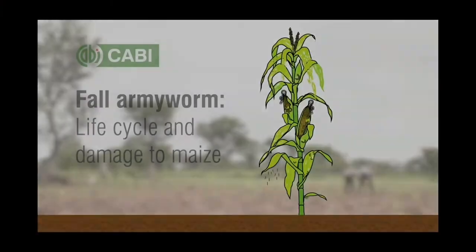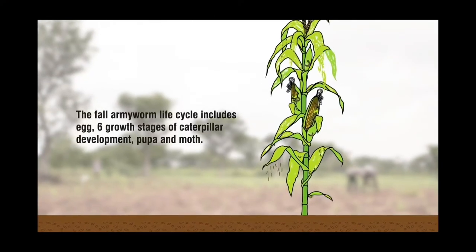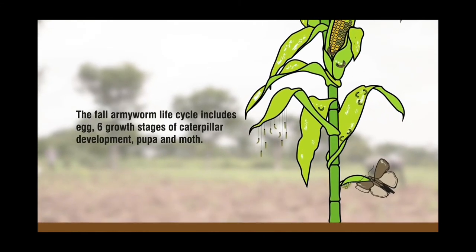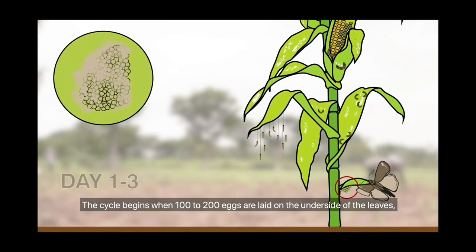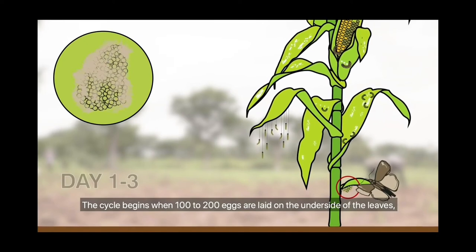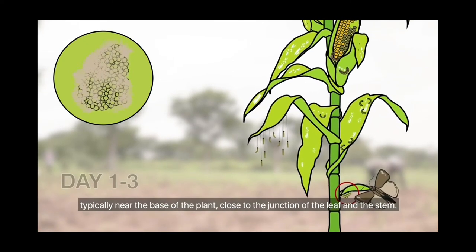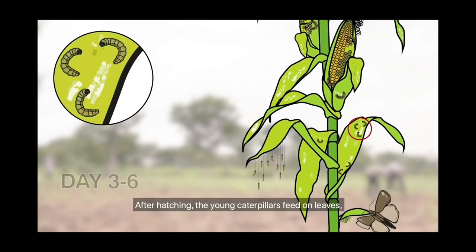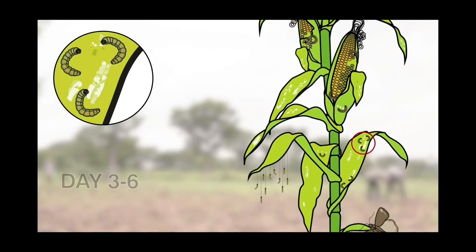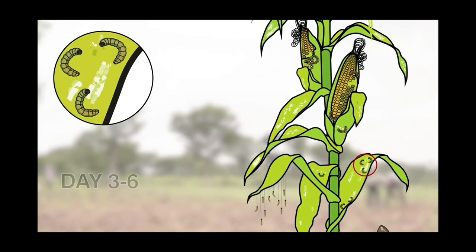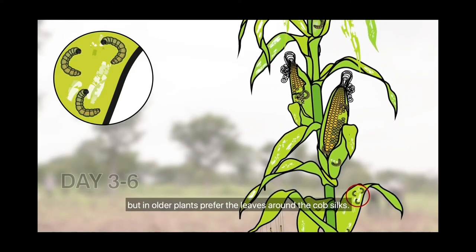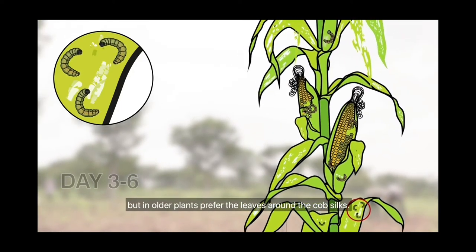The fall armyworm life cycle includes egg, six growth stages of caterpillar development, pupa, and moth. The cycle begins when 100 to 200 eggs are laid on the underside of the leaves, typically near the base of the plant, close to the junction of the leaf and stem. After hatching, the young caterpillars feed on leaves, leaving semi-transparent patches called windows. In young plants, caterpillars prefer to eat the leaf whorl, but in older plants prefer the leaves around the cob silks.